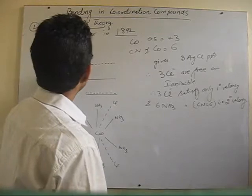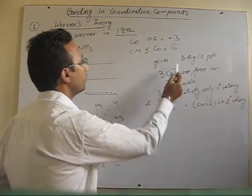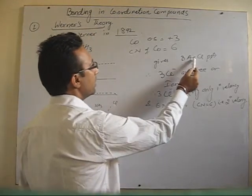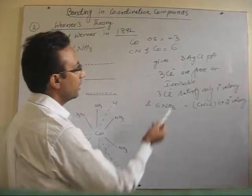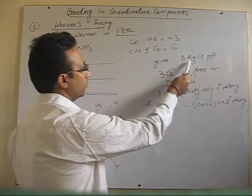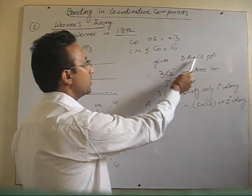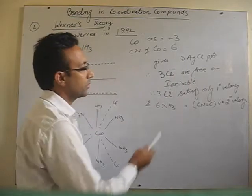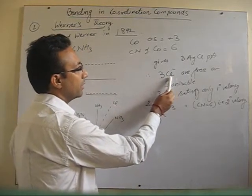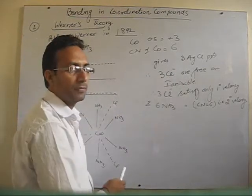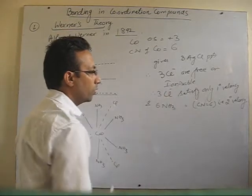In this case, this complex is formed to give 3 AgCl precipitates. From this we came to know, if 3 AgCl precipitates are there in a solution, that means there are 3 Cl⁻ which are free — that is, ionizable.